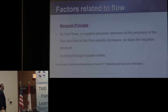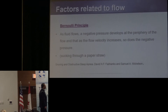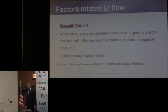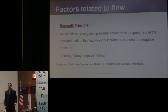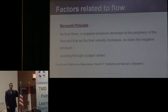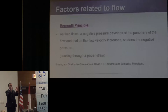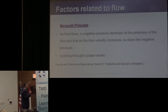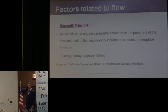This is based on the Bernoulli principle, which states that as fluid flows, a negative pressure develops at the periphery of the flow, and most importantly, as flow velocity increases, so does the negative pressure. The best way to imagine it is breathing through a collapsible paper straw — the upper airway is collapsible. If you breathe hard, you cause negative pressure on the inner walls of the airway, causing collapse. And if positive pressure helps open the airway, then reducing negative pressure should also help ensure the airway stays more open.